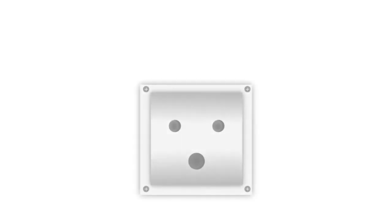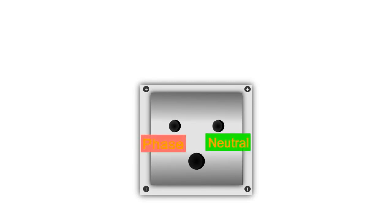A single-phase system consists of two conductors, a phase and a neutral. Voltage polarity of the phase conductor changes from positive to negative alternatively. Due to this, if we connect an electric load between them, an alternating current flows through it.